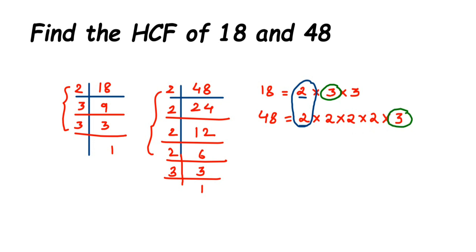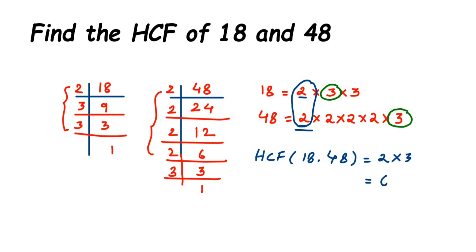Once we have the common factors, we multiply them to get the HCF. So the HCF of 18 and 48 = 2 × 3 = 6. So 6 is the HCF of 18 and 48. It's a very simple method. I hope it's clear — if you have other questions or doubts, drop a comment. Thank you so much for watching!